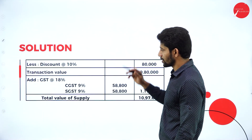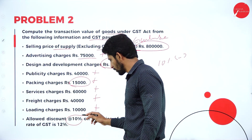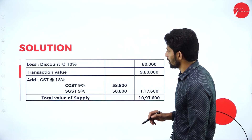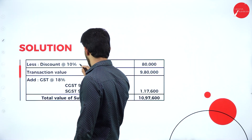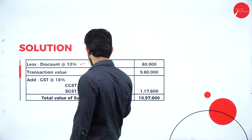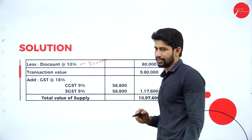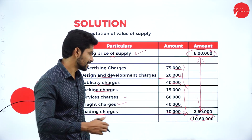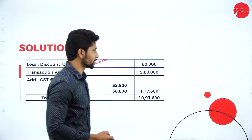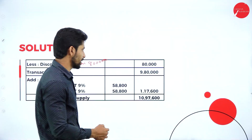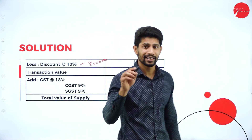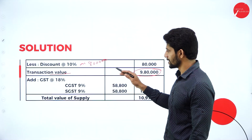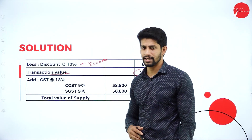Less discount: 10% on the price of goods, which is ₹8,00,000 — that is ₹80,000. From ₹10,60,000 deduct ₹80,000; the balance is ₹9,80,000. This ₹9,80,000 is called the transaction value.